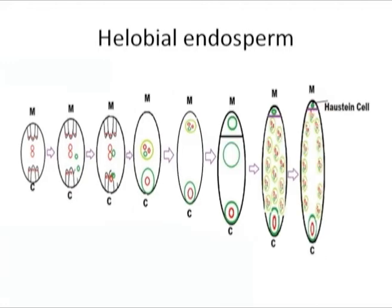In the helobial type of endosperm, both nuclear and cellular types of development take place. In the beginning, two cells are formed by the first division of the endosperm nucleus with cell wall formation. One of these cells degenerates and the other forms the endosperm. Further division of the nucleus in the functional cell is not accompanied by cell wall formation, so the subsequent divisions are free nuclear divisions, and the endosperm resembles the nuclear endosperm.